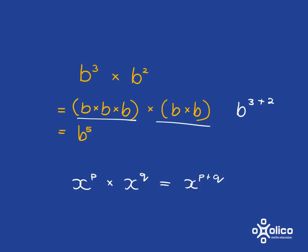And again, easy to picture. This is p x's all multiplied together. This is q x's all multiplied together. So in total, we've got p plus q x's multiplied together.